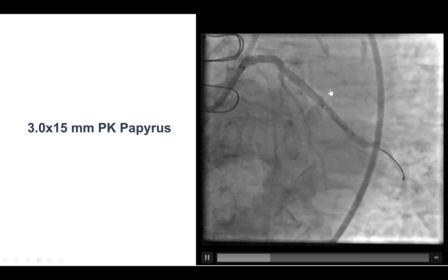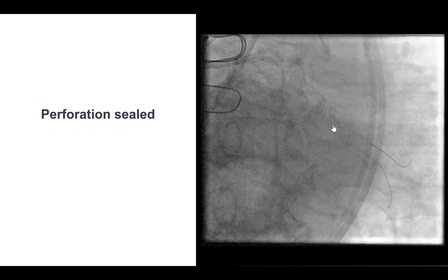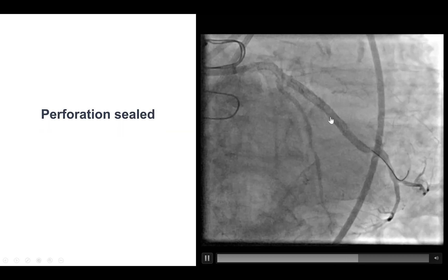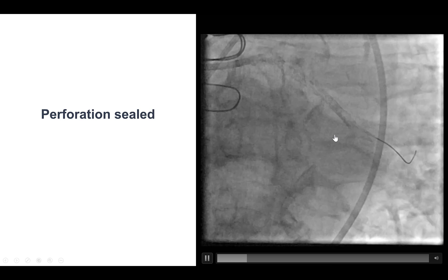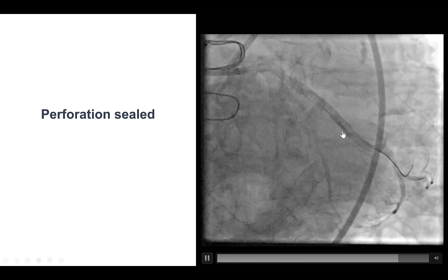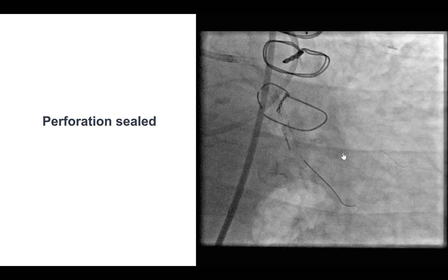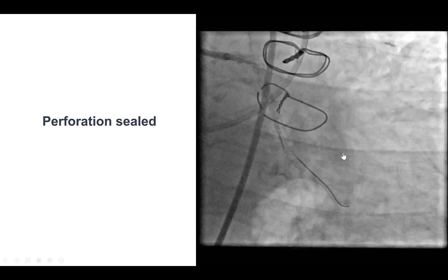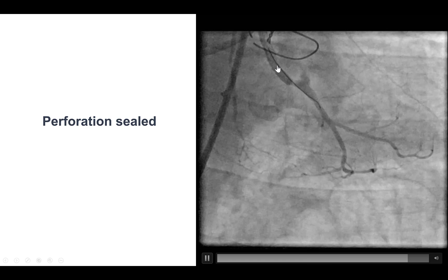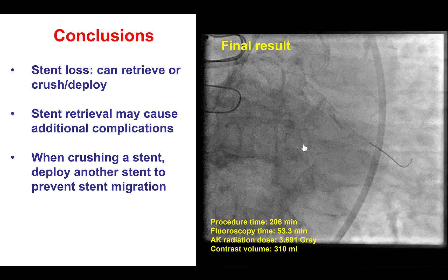We were able to deliver the Papyrus in place and then it was deployed, and that provided a nice result. We can see the lost stent on the side just outside the Papyrus, but now it's fixed in place and we do not have any more perforation. We can see in another view the location of the lost stent that has been crushed, but now it's securely held in place.